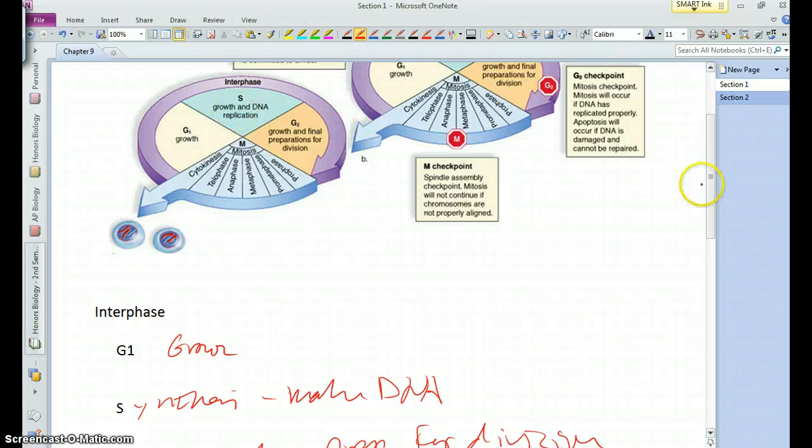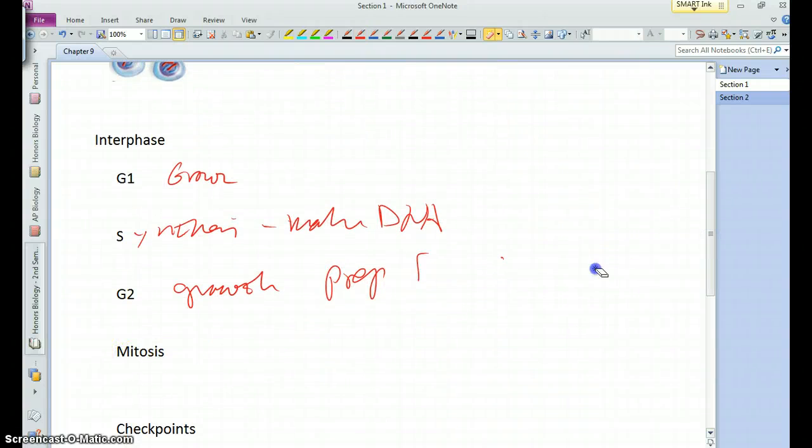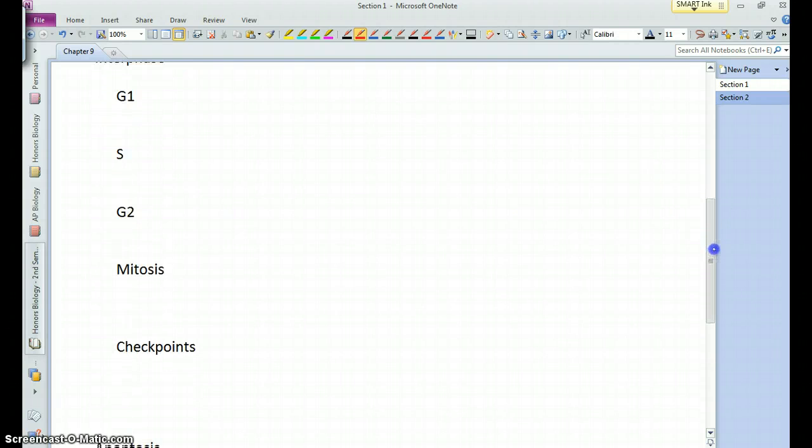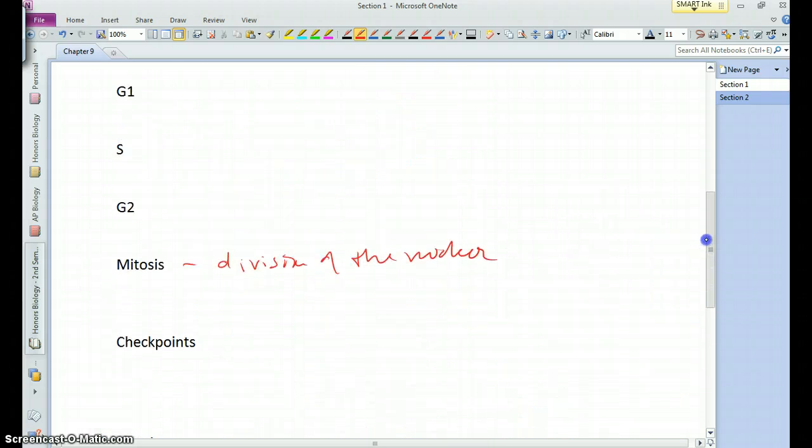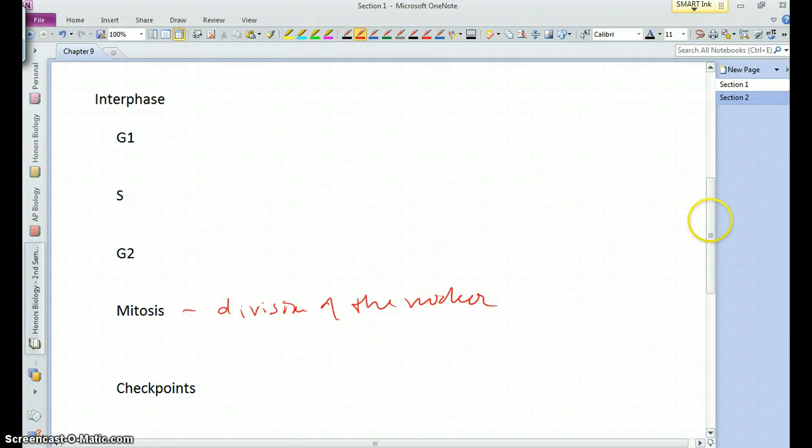After interphase with G1, S, and G2, you go into mitosis, which is a very important step before the cell actually divides. Mitosis, I think the best way to think of it is as division of the nucleus, or duplication of the nucleus. We take within that cell the nucleus and the duplicated chromosomes within it, and we essentially rearrange those chromosomes and split that nucleus into two separate nuclei such that each of those nuclei is identical to the other one.